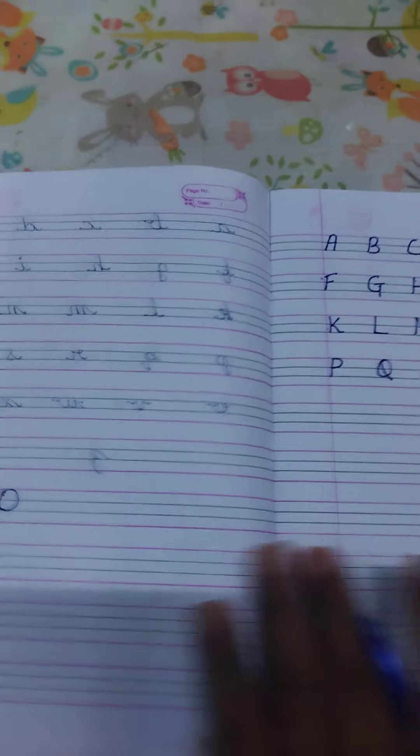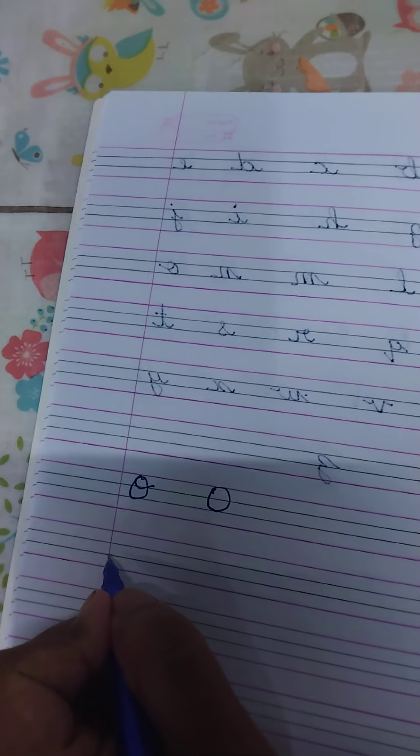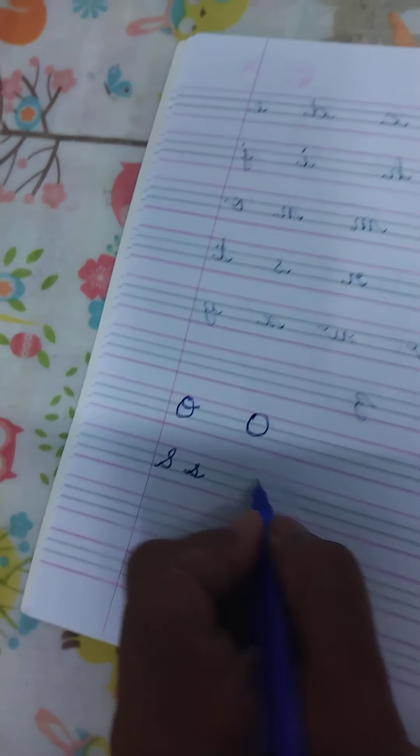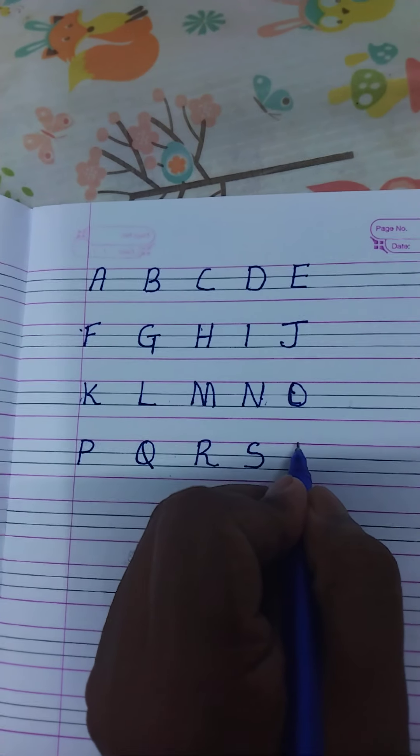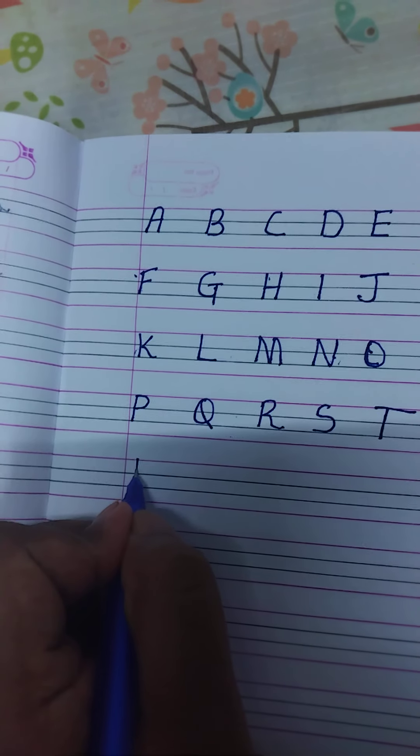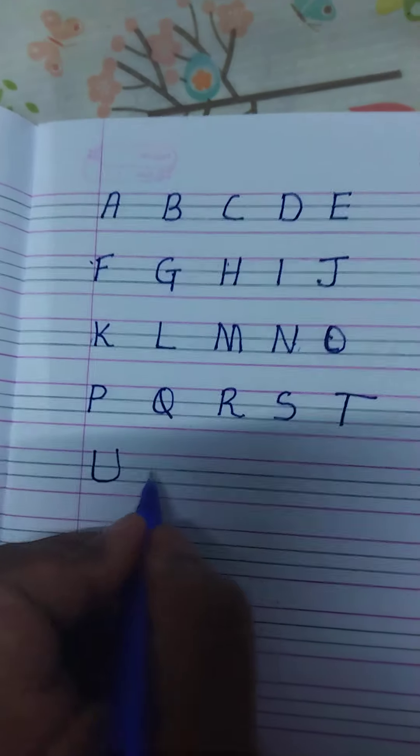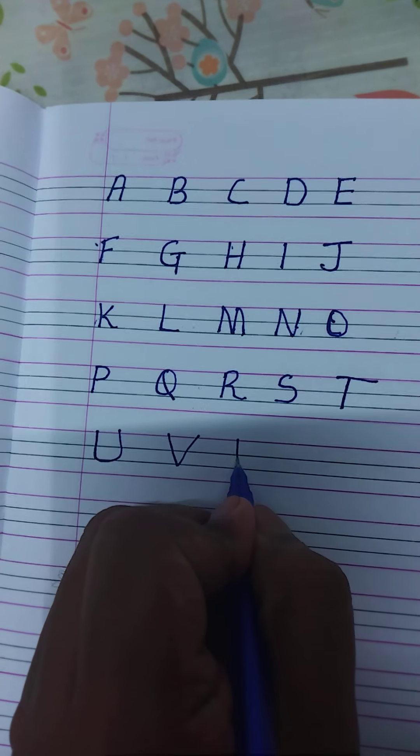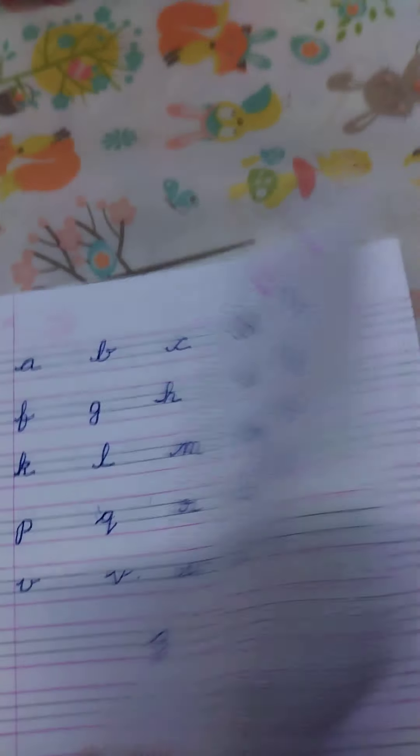There is a different type of S. This is cursive S big letter, and this is small letter cursive S. And this, T, U, V, W. That's all. Thank you.